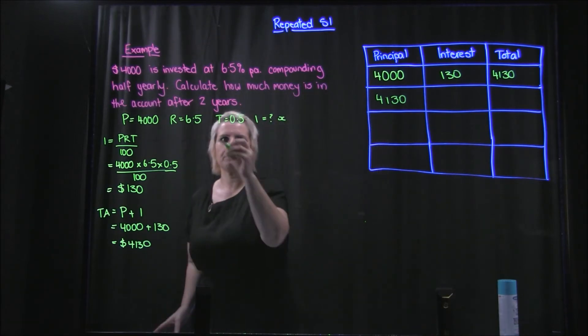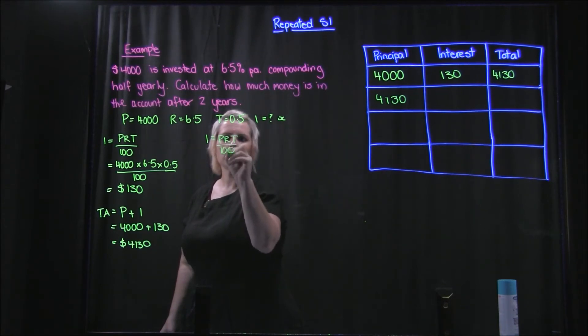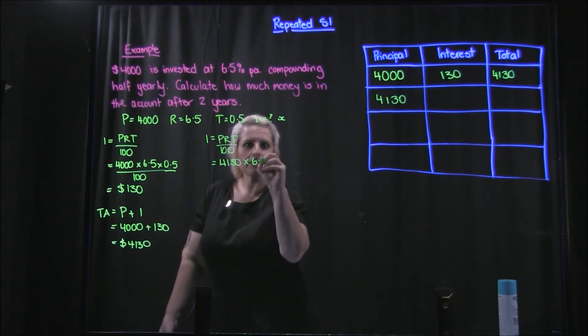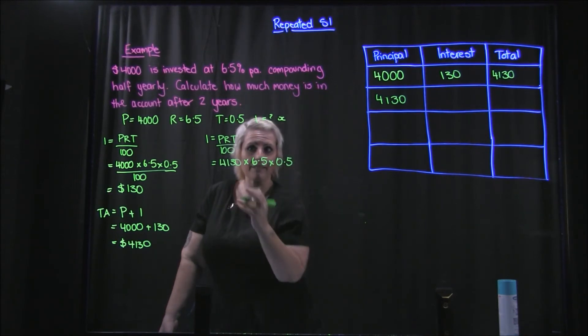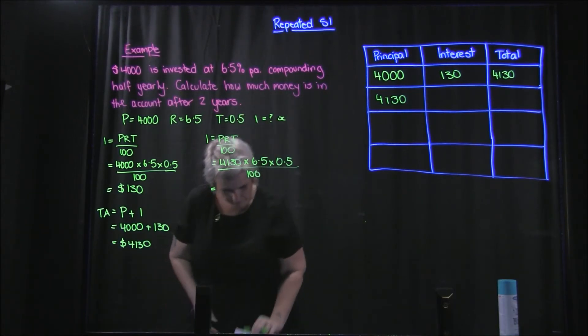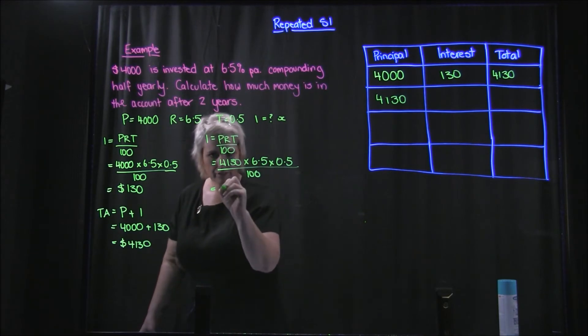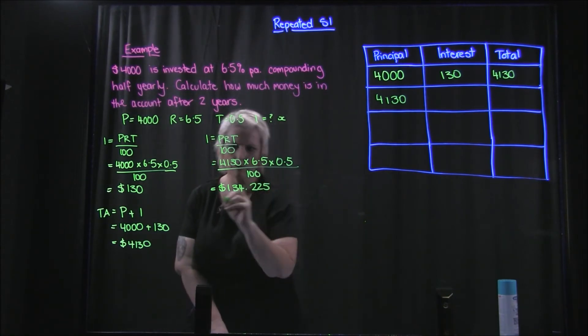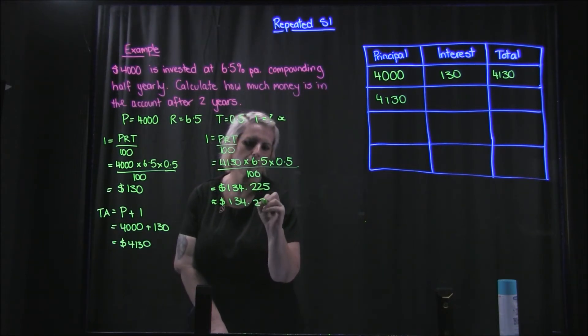Now we work out our next period. So we do the same thing: I equals PRT over 100. And it will be 4130, so we use our new principal. It'll still be by 6.5 and by 0.5 because it still compounds every six months, over 100. And we end up with $134.225 which we can round to $134.23.